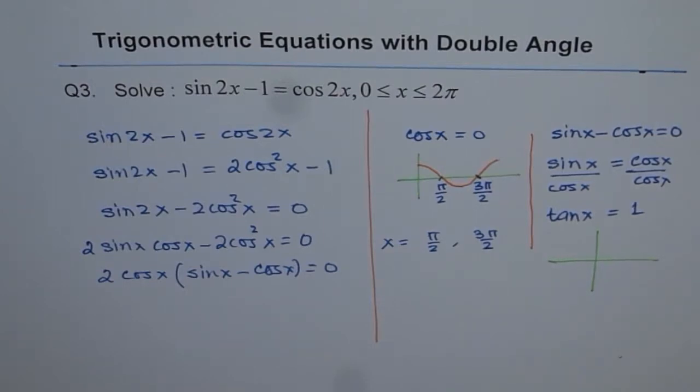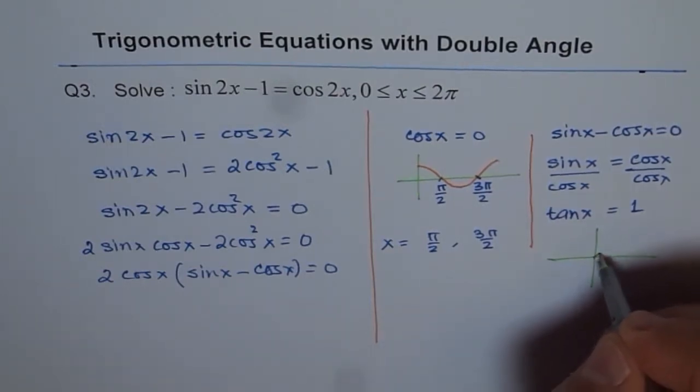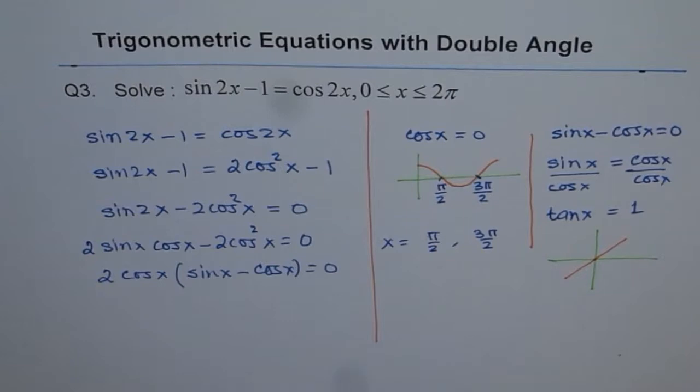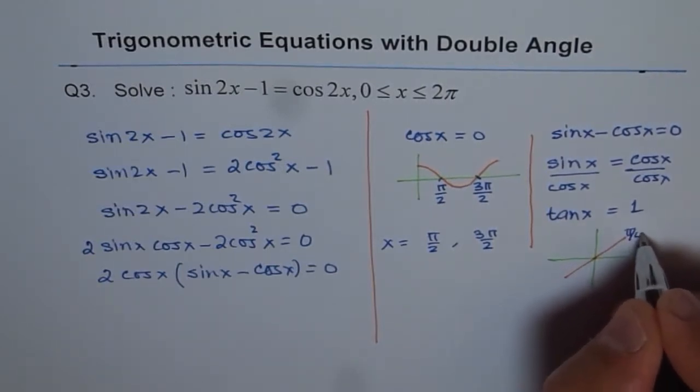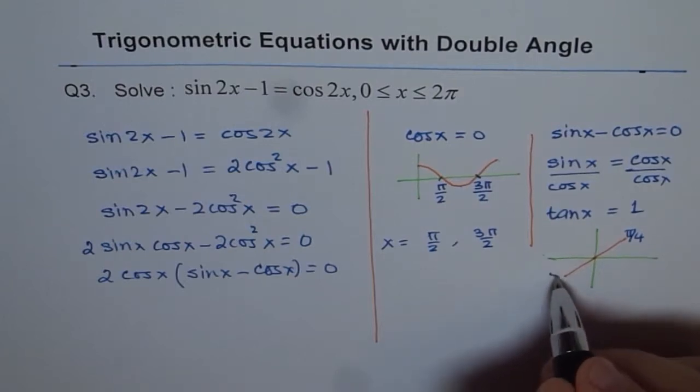One solution is when tan is in quadrant 1, the other when it is in quadrant 3. The angle is π/4 here, and this is 5π/4.